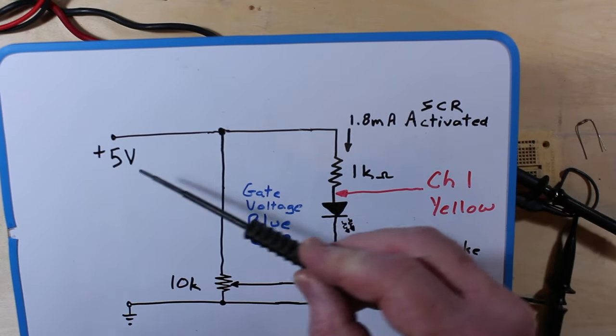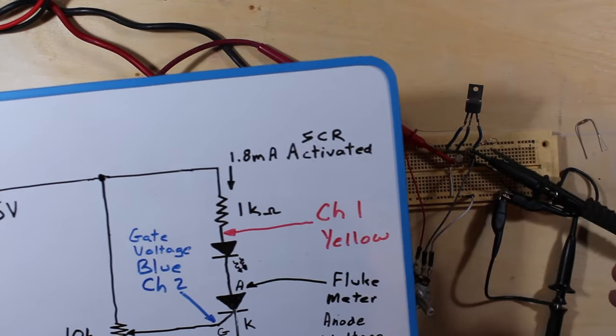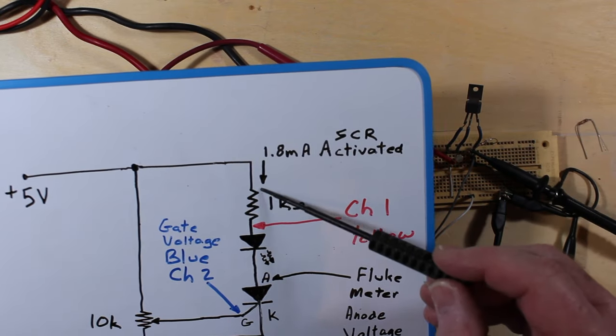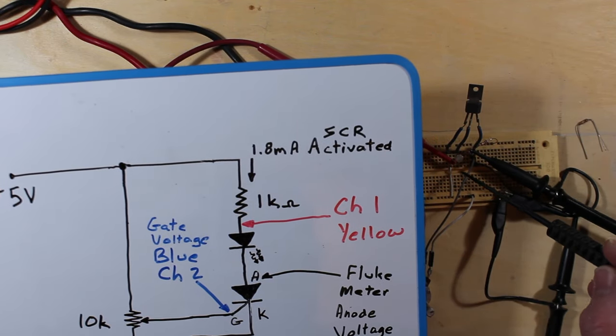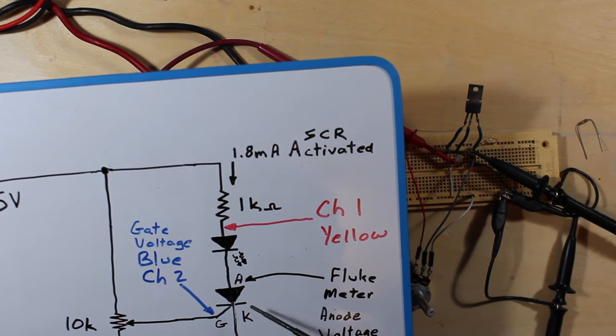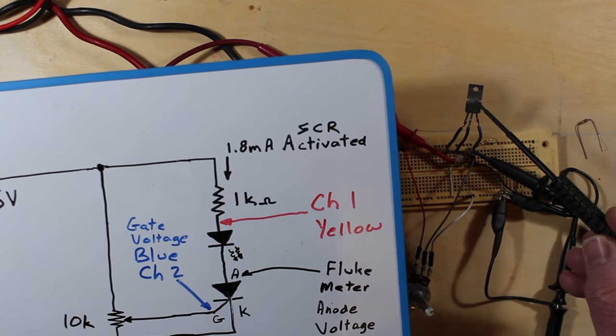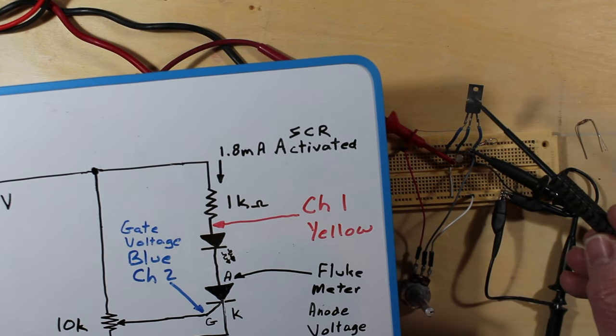We have a 5 volts supply. We've got our 1K resistor here for current limiting for the LED. We have our LED down in here. We have the SCR, the silicon controlled rectifier, and that's this one right here.